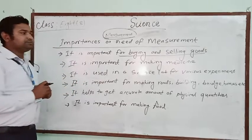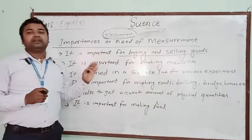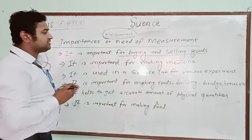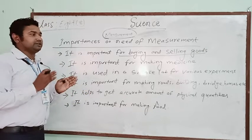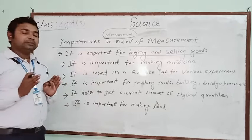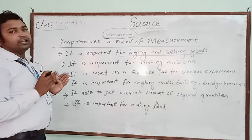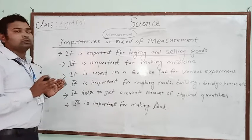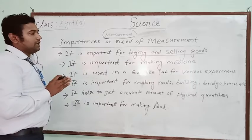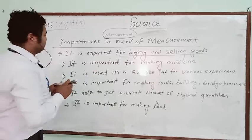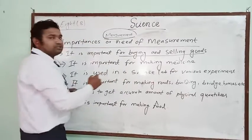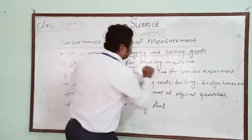Another importance is for making medicine. While making medicine, they are also using different chemicals in precise, restricted forms. At that time, measurement is really important — how much ratio you have to mix them to make a medicine. This is also very important.